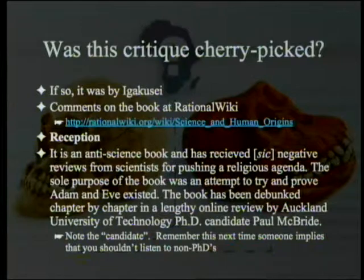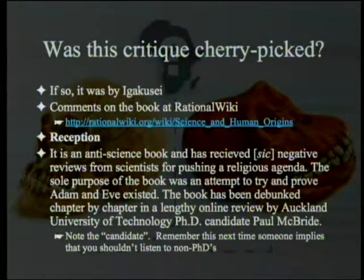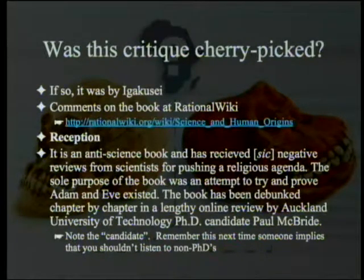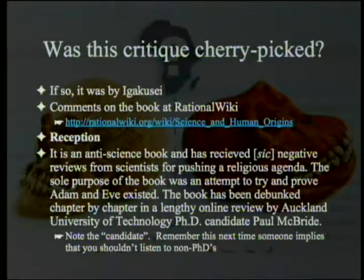The comments in the book by Rational Wiki tell about the book itself and then tell its reception. This is referring to Science and Human Origins. It is described as an anti-science book that has received negative reviews from scientists, and is said to be pushing a religious agenda. The sole purpose of the book was an attempt to prove Adam and Eve existed. The book has been debunked chapter by chapter in a lengthy online review by Auckland University of Technology PhD candidate Paul McBride. I just simply put that up because that's the way they put it — everybody makes mistakes on the internet.